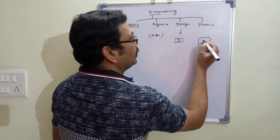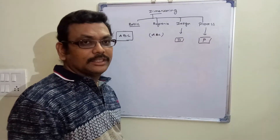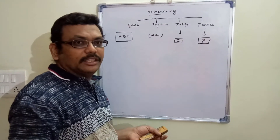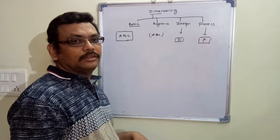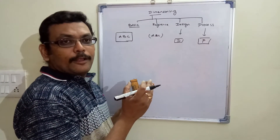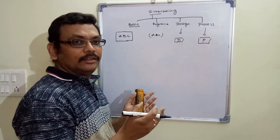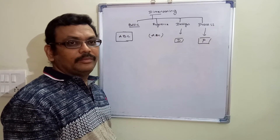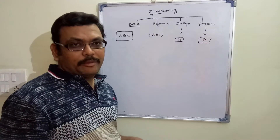Similarly, a process dimension is used only for processing or manufacturing. Different people use different terminology for process and design dimensions. During manufacturing, the dimension is required, but afterwards it is of no use. A dimension used only for manufacturing or processing is called a process dimension.